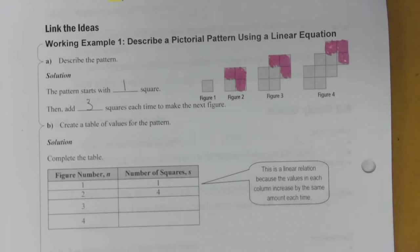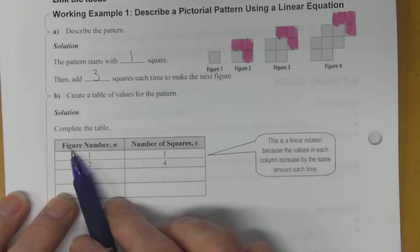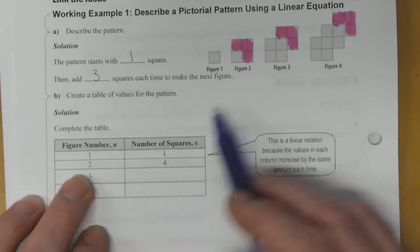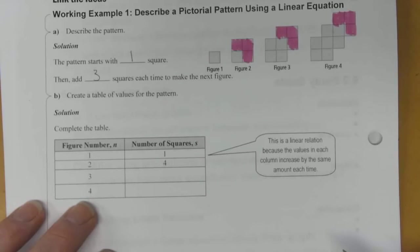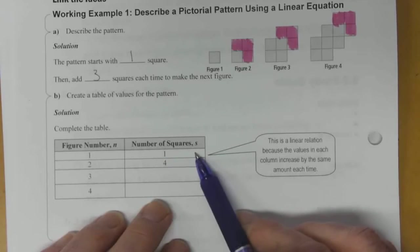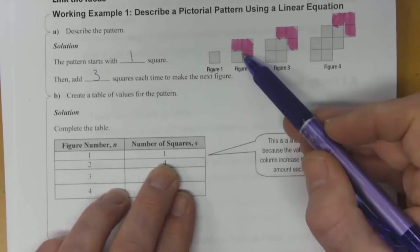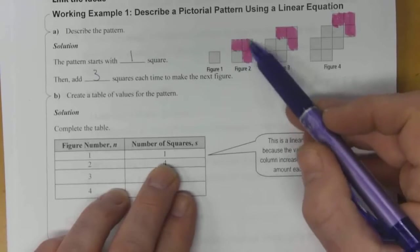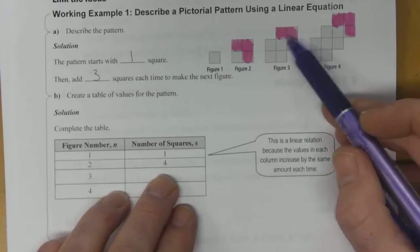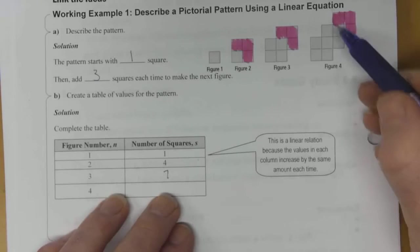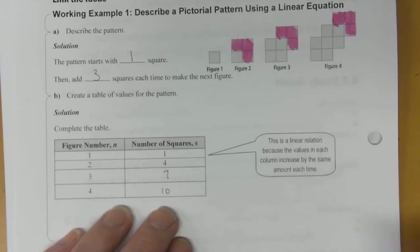So we can create a table of values to indicate this pattern. We can chart two columns. The first column is the figure number, which we're going to call n as a variable — figure 1, 2, 3, and 4. Column 2 is the number of squares involved in the diagram. In figure 1 we had 1. In figure 2 we added 3, so 1 plus 3 gives us 4. We added another 3 in figure 3, so 4 plus 3 is 7. And then figure 4, another 3 gives us a total of 10. So now this chart is complete.